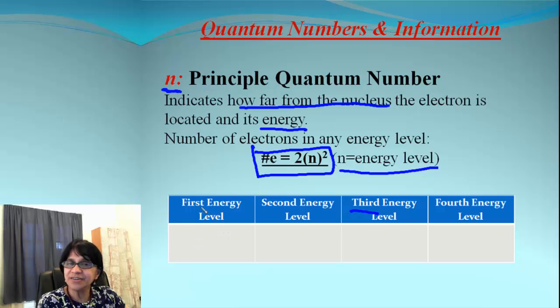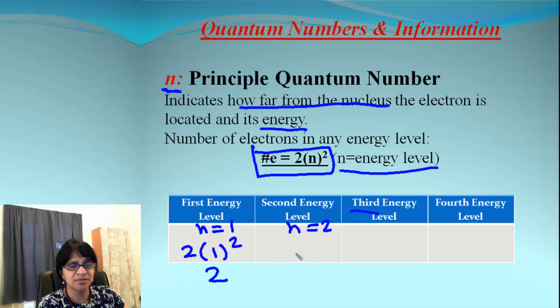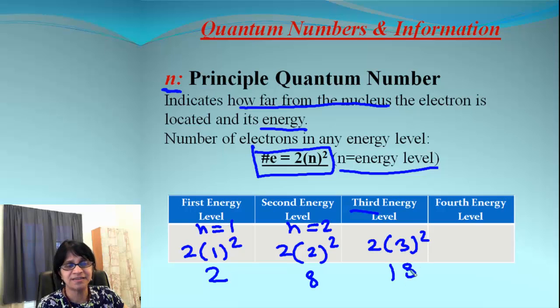So if it's energy level number one, N equal to one, this is going to be two times one square, which is two. If it's second, N equal to two, it will be two times two square, which will be eight. If it's third, it is two times three square, that's 18. And if it is fourth energy level, two times four square, which will be 32.